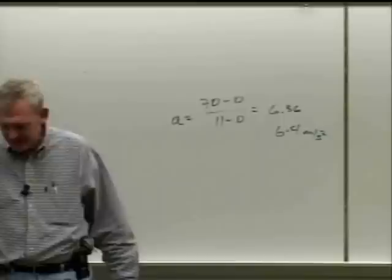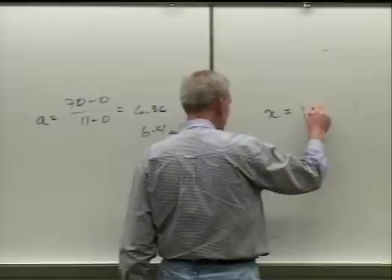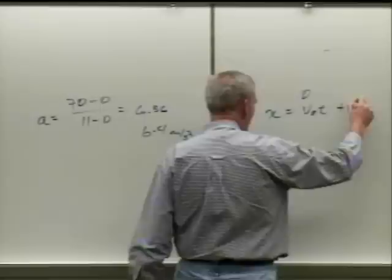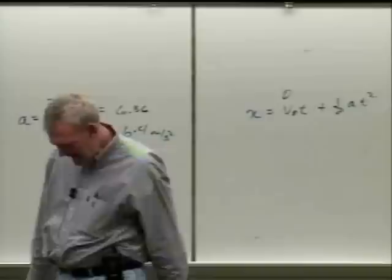A lot of you got 770 meters — no, because remember it started from rest. The distance would be x equals v-naught times t, where v-naught equals zero, plus one-half at squared. A handful of students forgot to square the t.